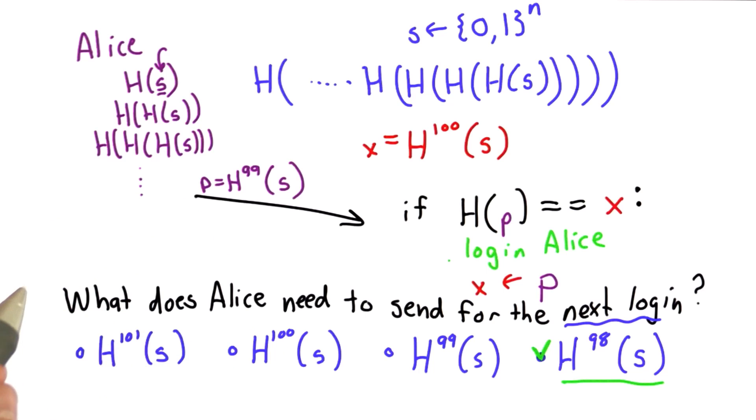The hash is hard to compute in one direction. That's the valuable property the hash function gives us. And so we have to go backwards if we want to use it for authentication. And here we're using it to authenticate Alice.